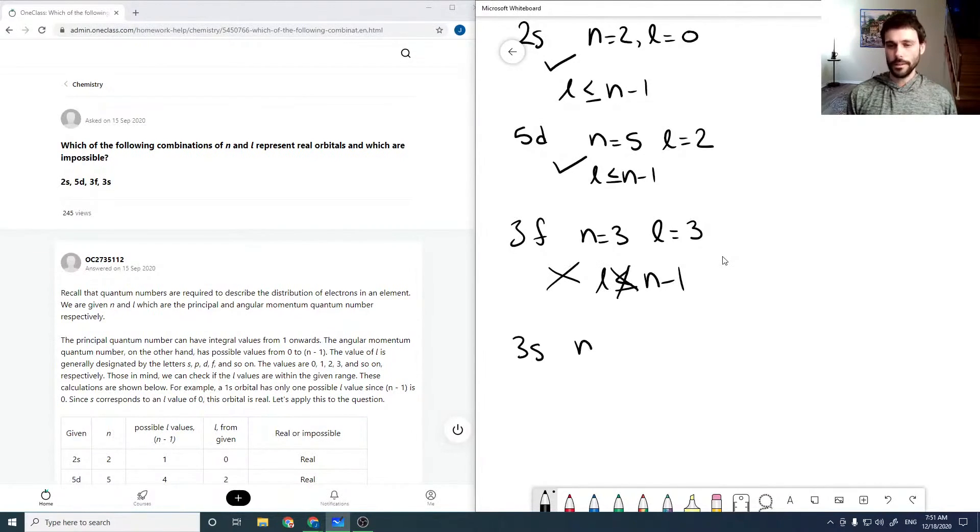And then for 3s, n equals 3, l equals 0. So that's good, l is less than or equal to n minus 1.